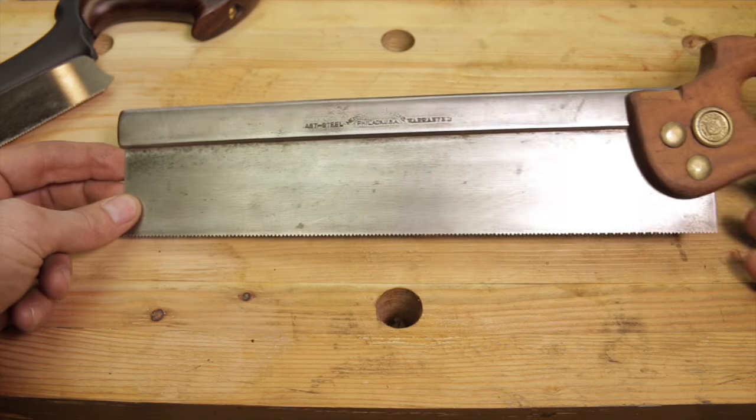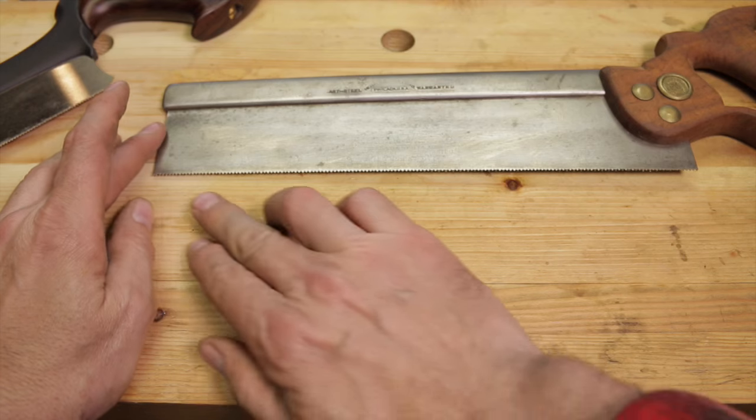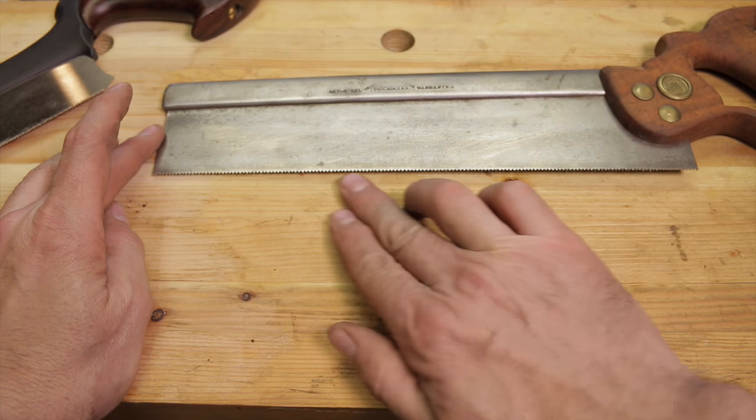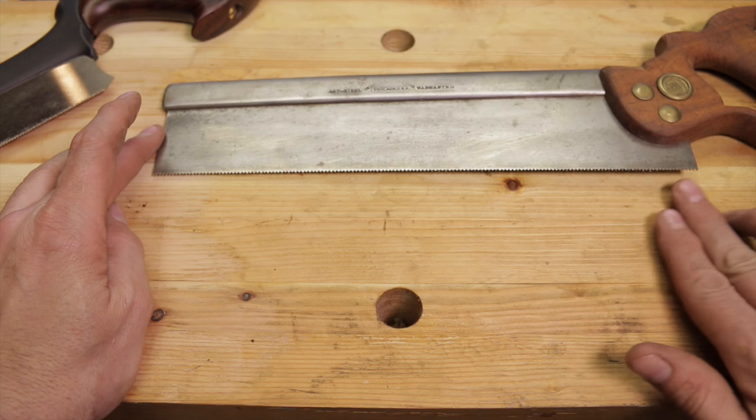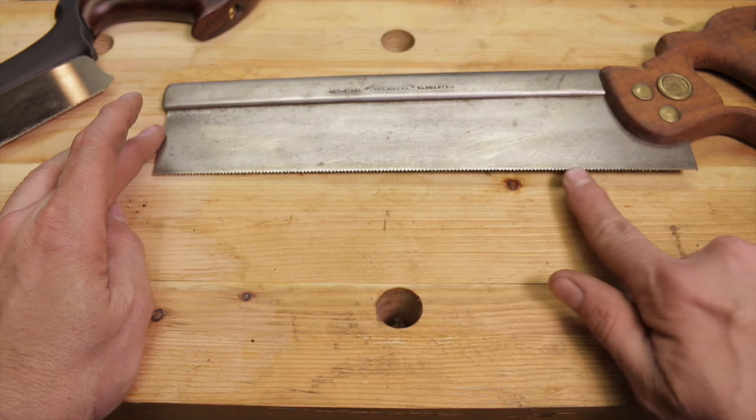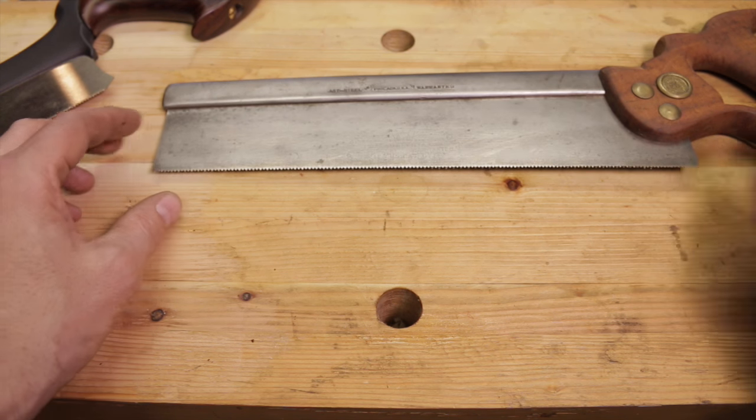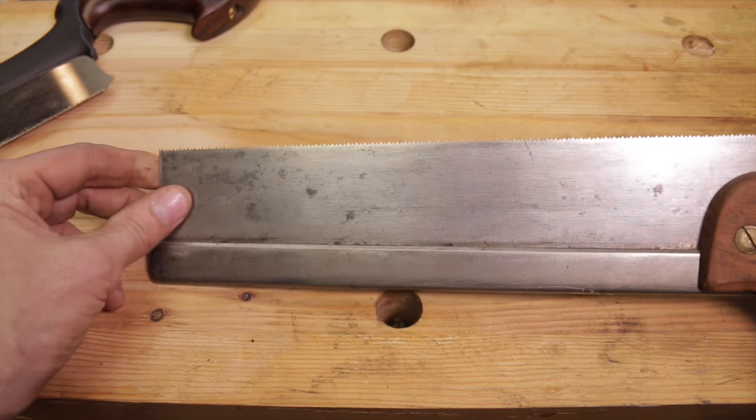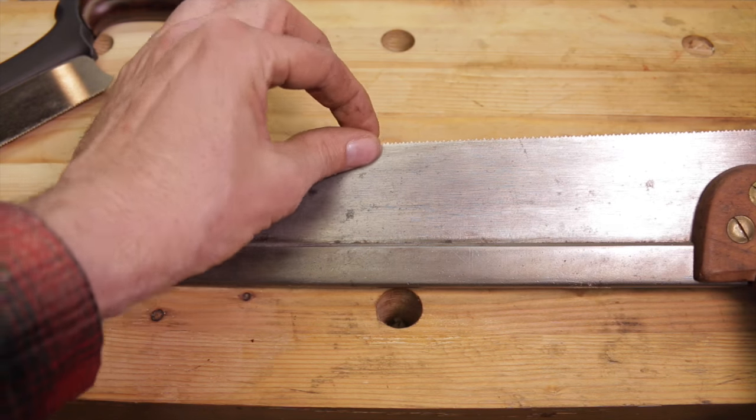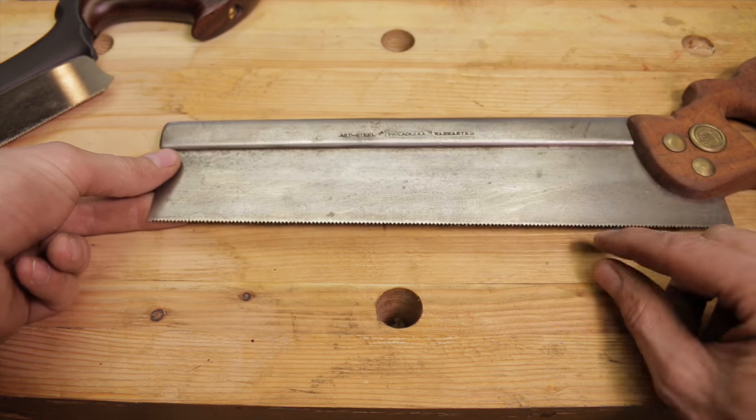The first thing we need to do is to joint it. Basically what we're going to do is take a flat file and knock down the top of these teeth till we hit every single tooth, so they're all exactly the same height. That gives us a starting point. That's why lighting is so important when we're filing saws - we need to be able to see the light refracting off of that point and file to it.